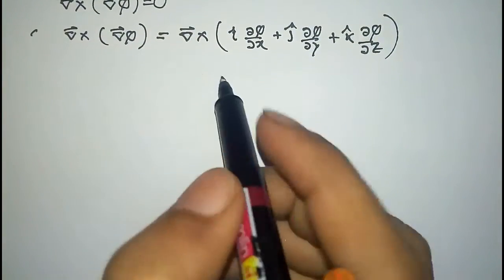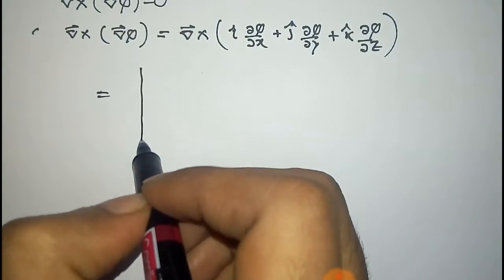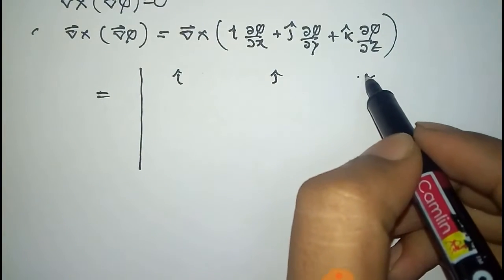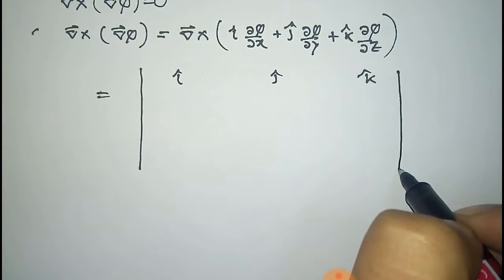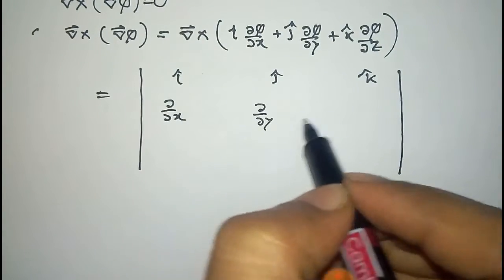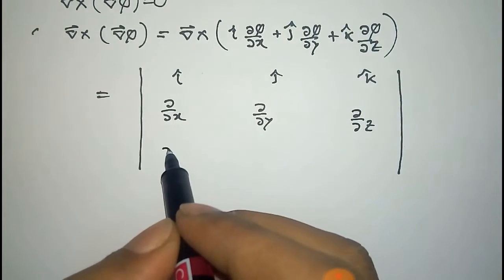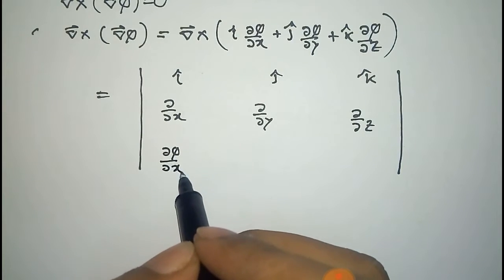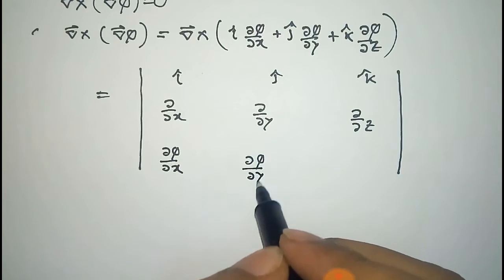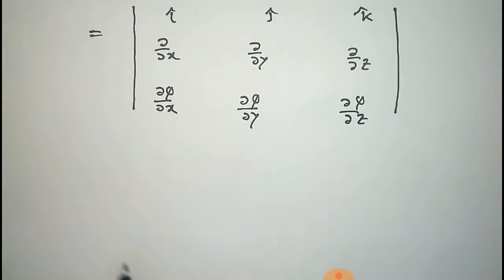Now we have to get the value of curl of this total term. It is given by the determinant with i-cap, j-cap, k-cap in the first row; del/del x, del/del y, del/del z in the second row; and the x-component del phi/del x, y-component del phi/del y, and z-component del phi/del z in the third row.